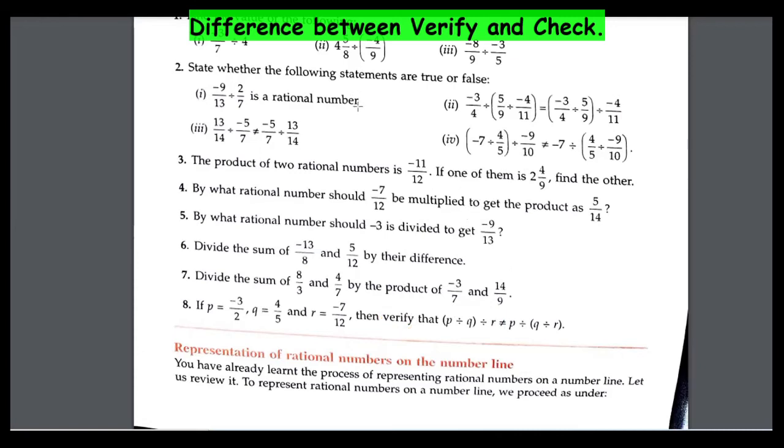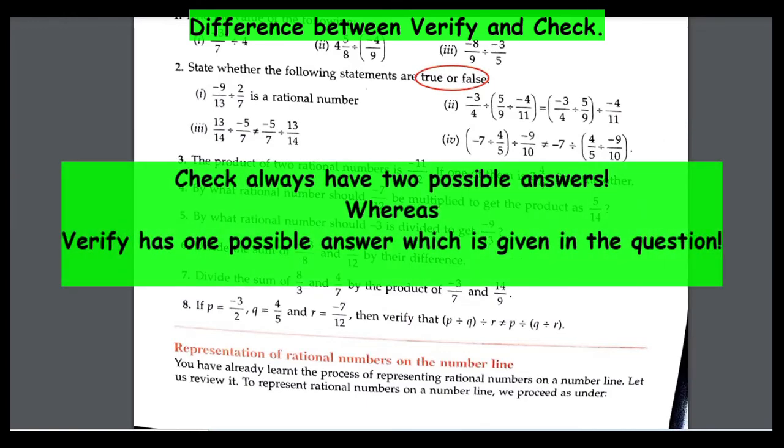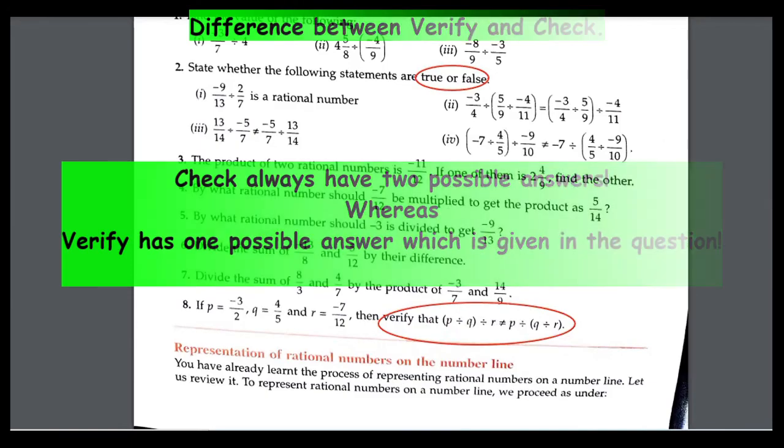Whereas if the question is check—true or false—you have to check which one is correct. Check always has two possible answers, whereas verify has one strict answer which is already given in the question. Is this thing clear?